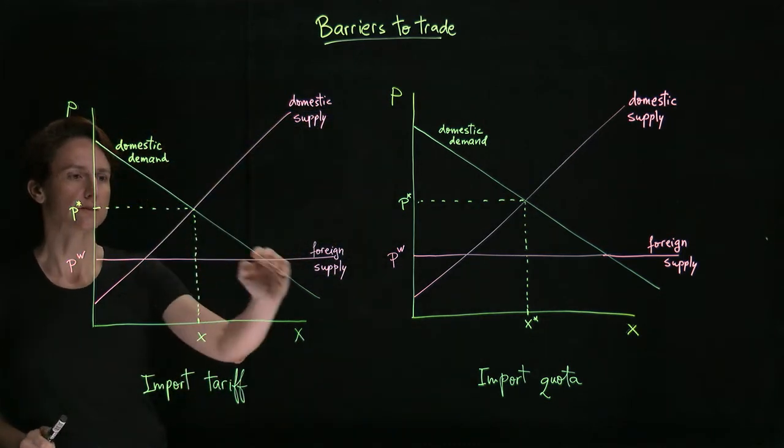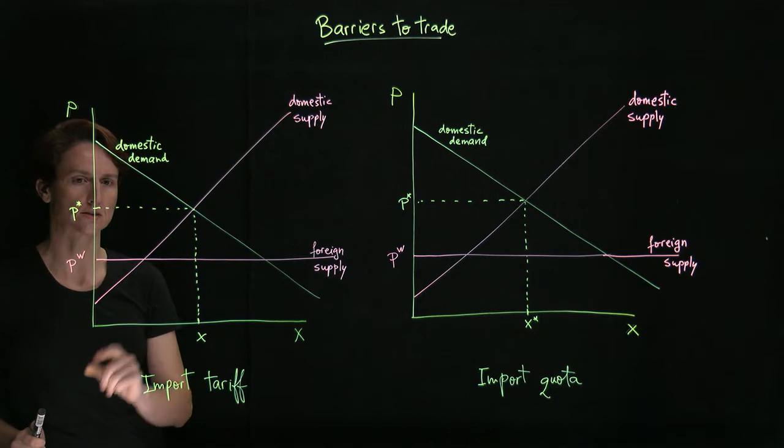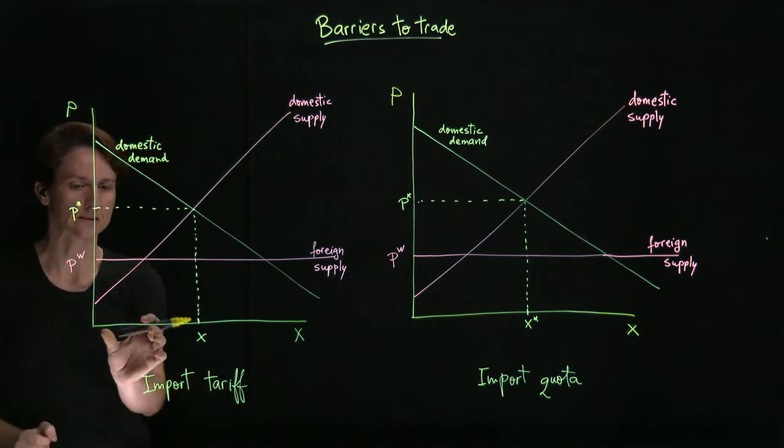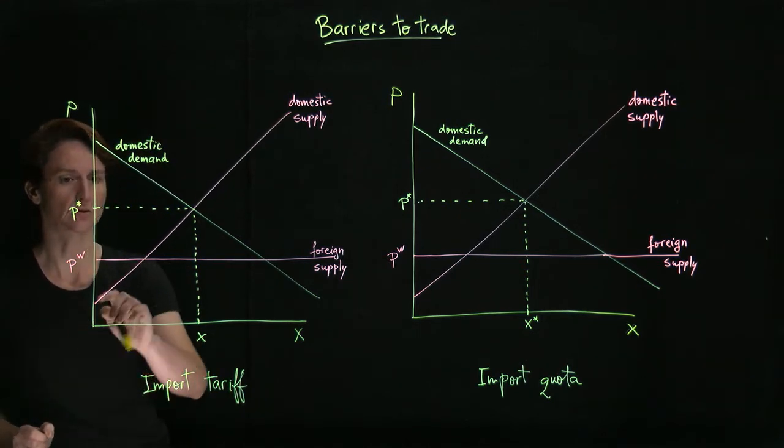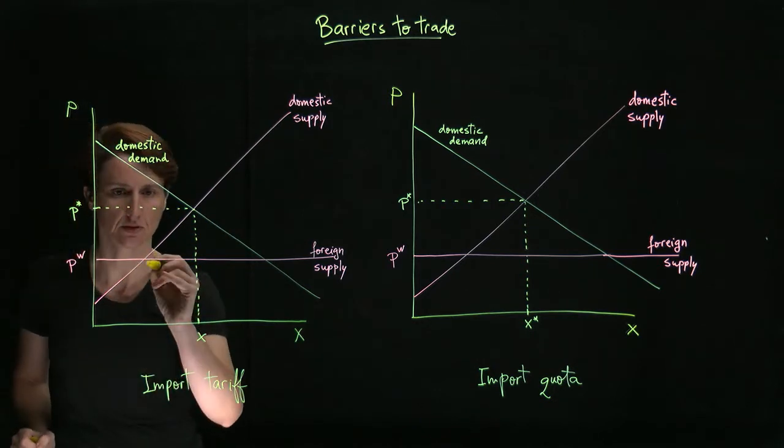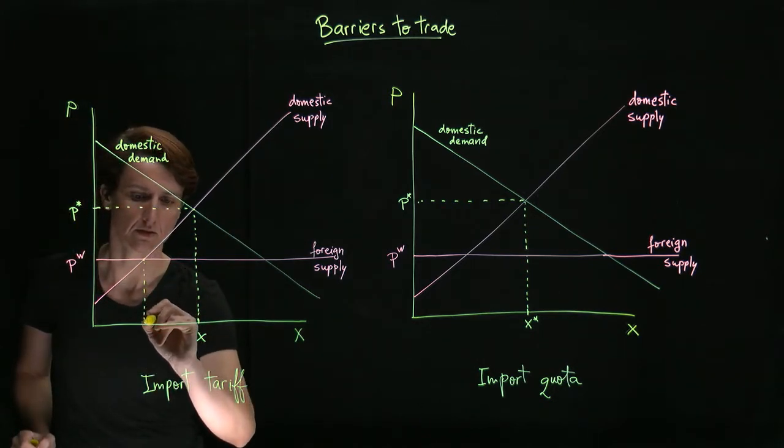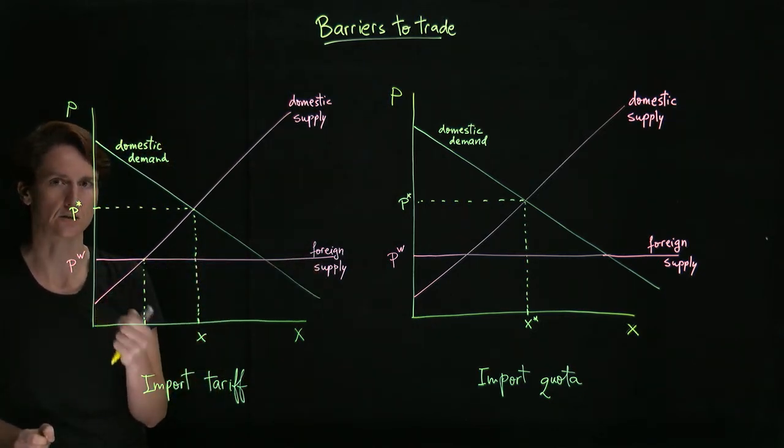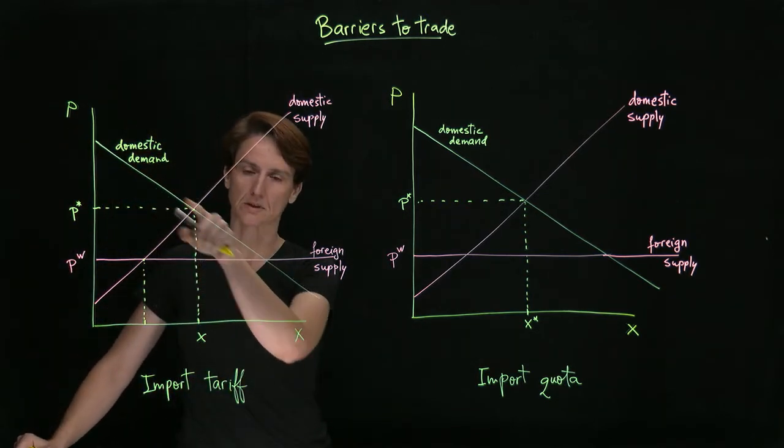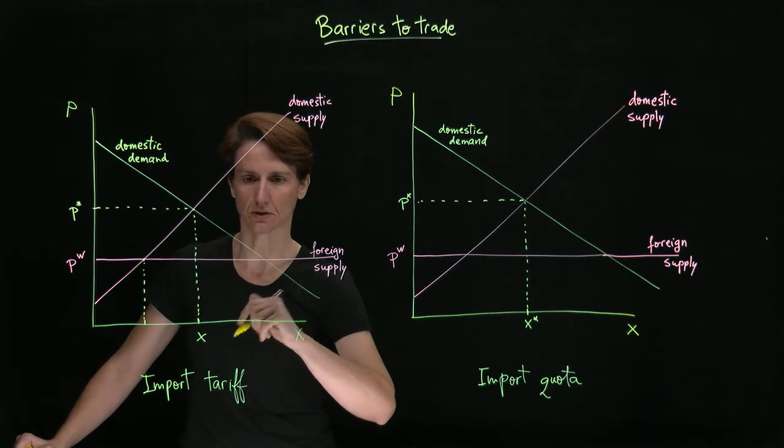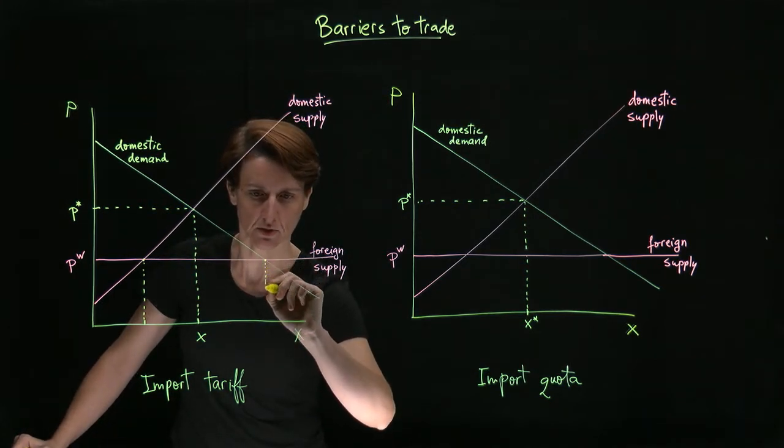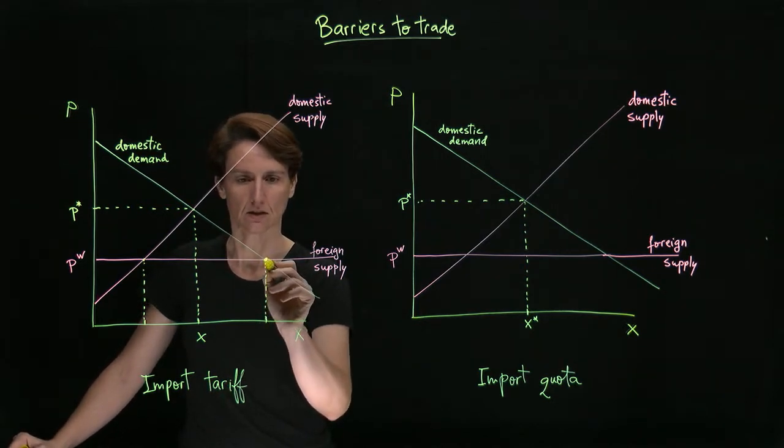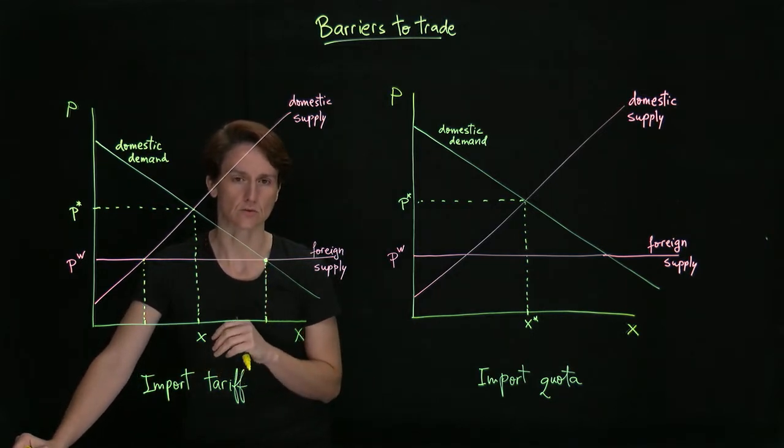Specifically, domestic consumers will always want to purchase the good at the cheapest price available. So for the first few units, they will prefer to purchase from domestic producers until foreign producers offer the good for a lower price, at which point domestic consumers purchase from foreign producers as long as their willingness to pay is still above that price.